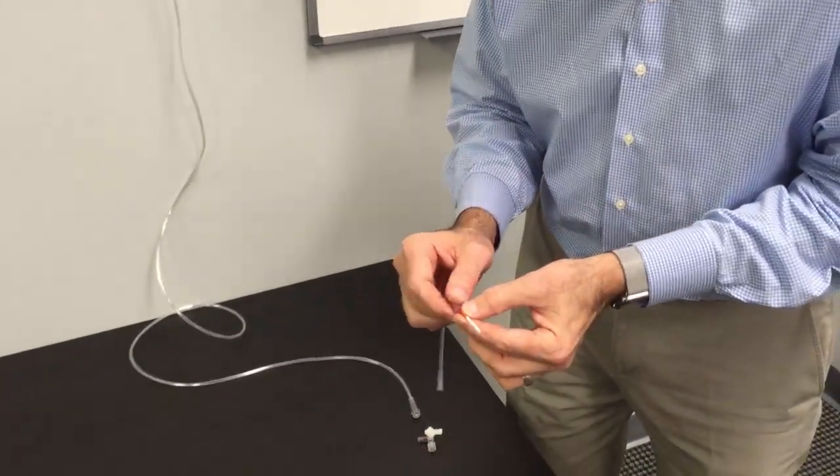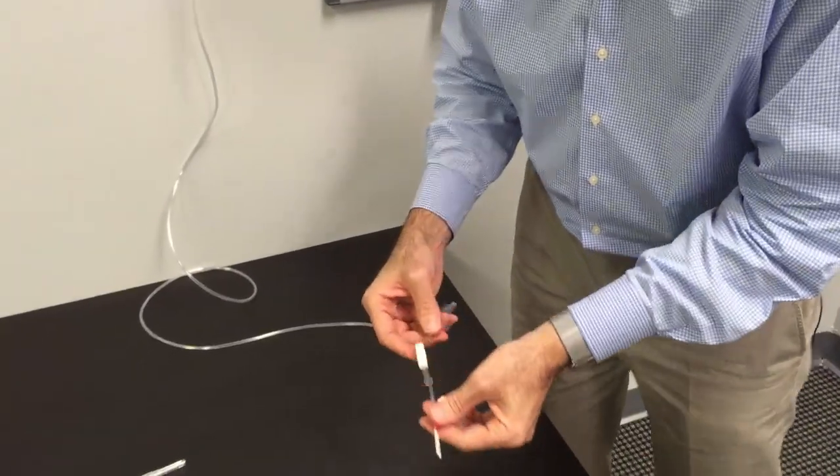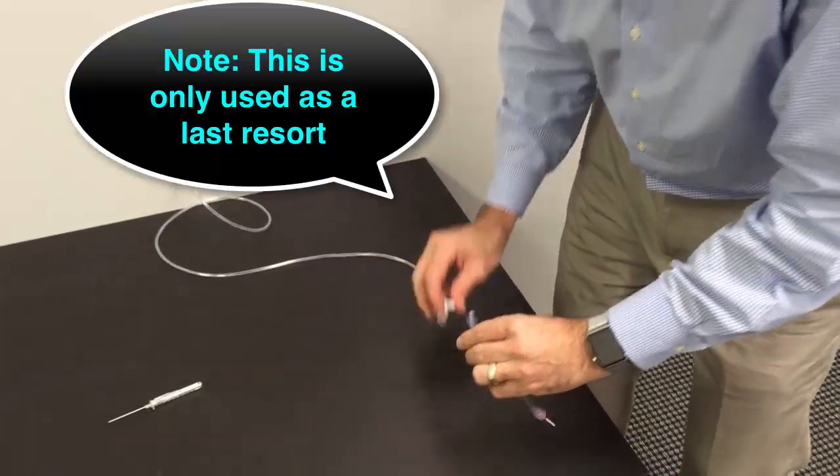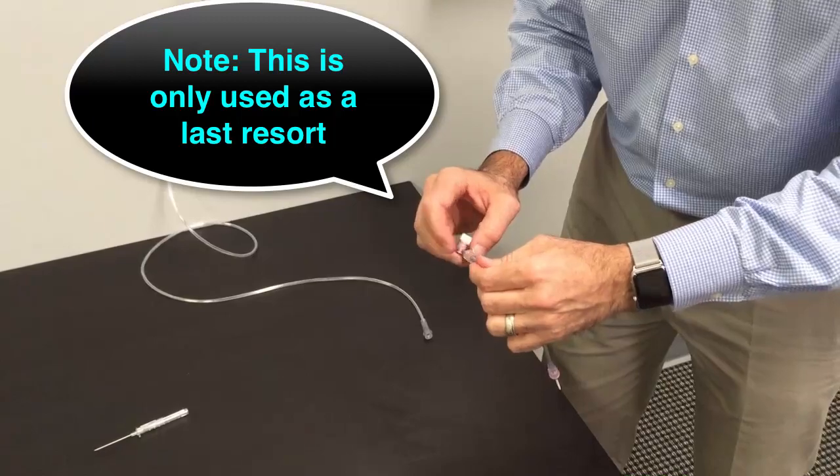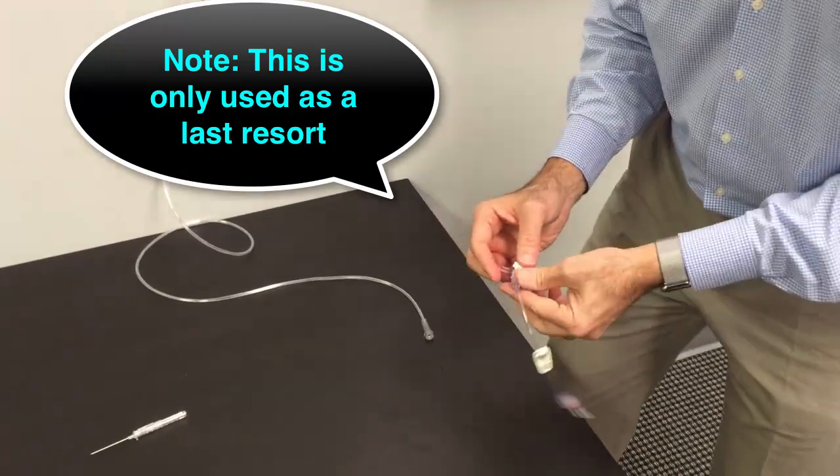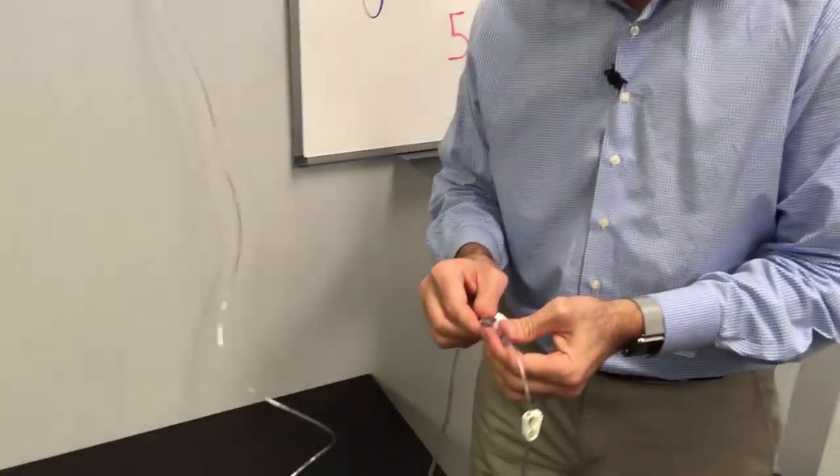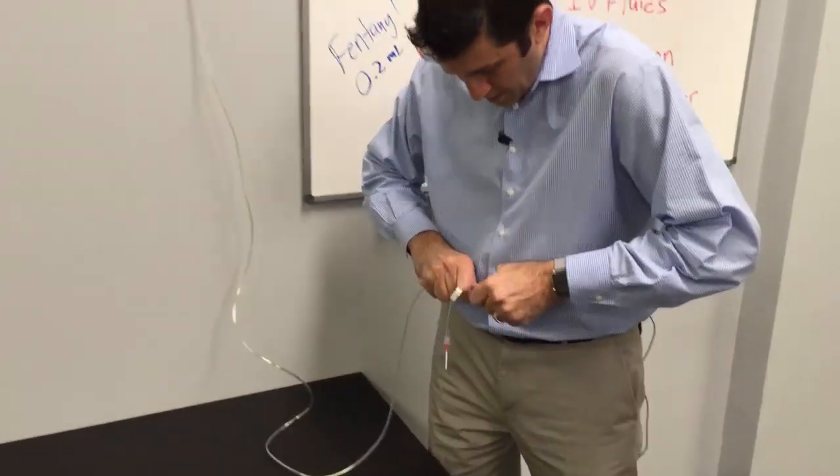You need the adapter. So this adapter will hook right up to that catheter. Now, you're going to hook this up right to the three-way stopcock here. And then you're going to hook that up to just basic oxygen tubing. So you have to squeeze that on really good.